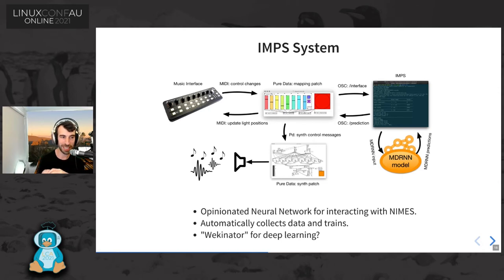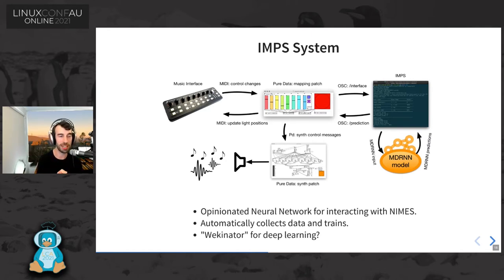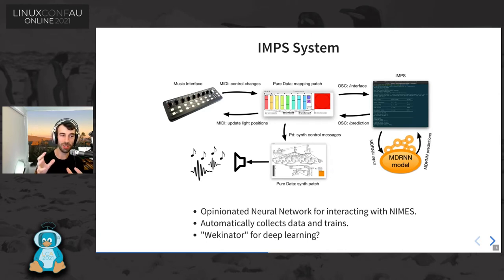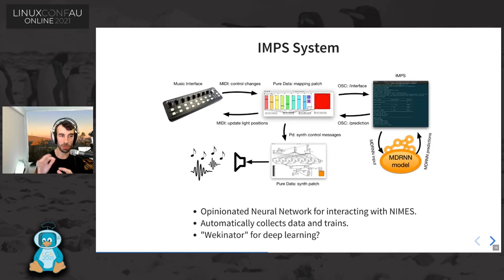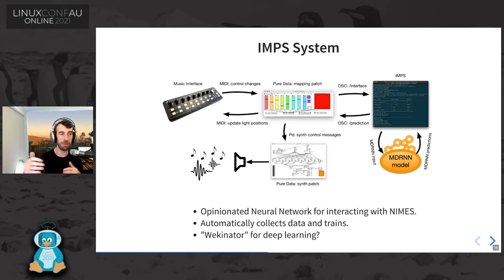On this slide it says 'Wekinator for deep learning,' and this is where the inspiration came for this system. There's a great system called Wekinator by music technologist Rebecca Fiebrink, who works at a university in London, with a great arts and computer science program. Wekinator allows music technologists to apply classical machine learning algorithms like k-nearest neighbors or simple regression algorithms for controlling mappings between a gesture and an output in a musical interface. I wanted to do something similar for deep learning, to make predictions through time or forward ahead in time.